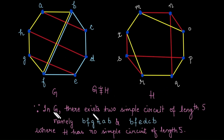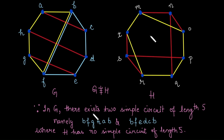The reason is: in graph G there exist two simple circuits of length 5 — the first is B-F, F-G, G-H, H-A, A-B, and the second is B-F, F-E, E-D, D-C, C-B. But in graph H there is no simple circuit of length 5. Due to this, graph G is not isomorphic to H, and that is the answer.